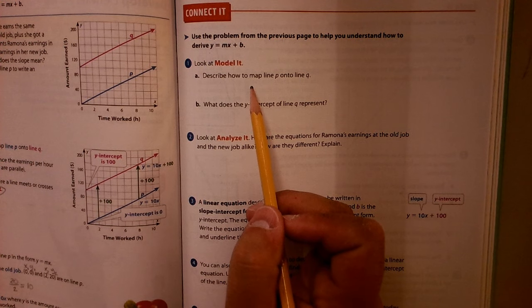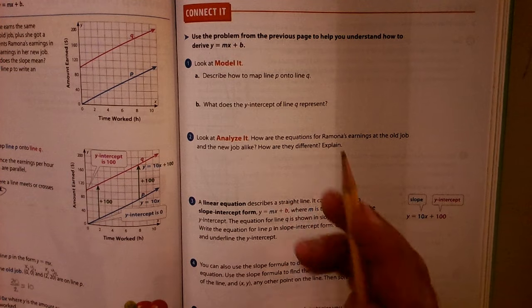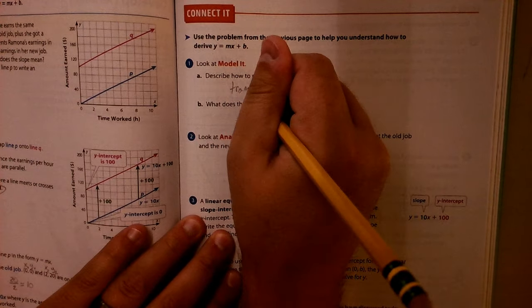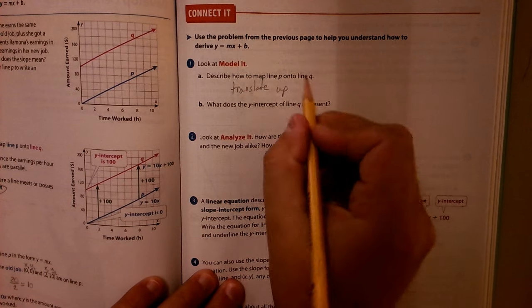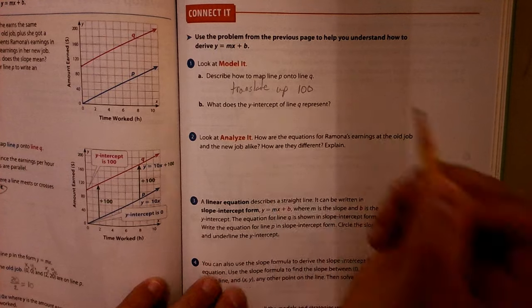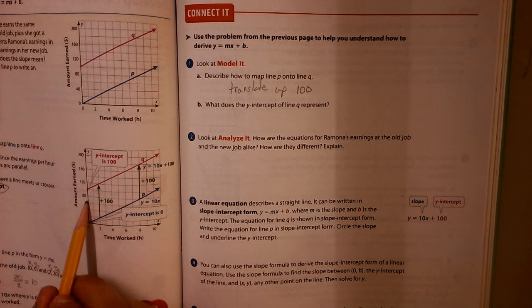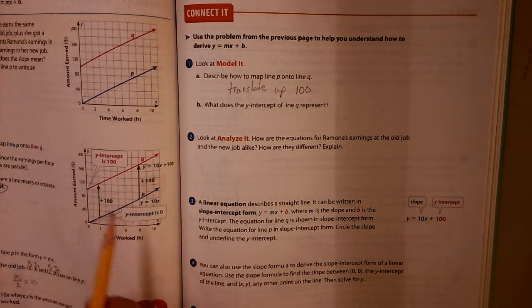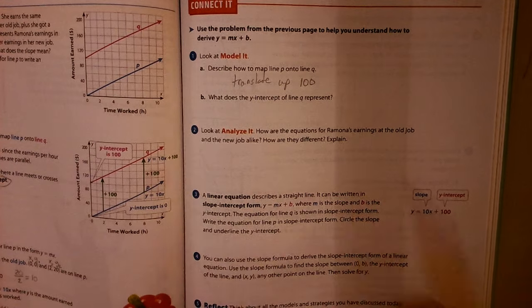We already talked about how we could just translate it. We can just take it and slide it up. So translate up. And we would have to go up 100. I know it doesn't look like that in the graph. It looks like maybe we only go up 1, 2, 3, 4, 5. But each of those five moves is worth 20 apiece, and that's why we get that 100.